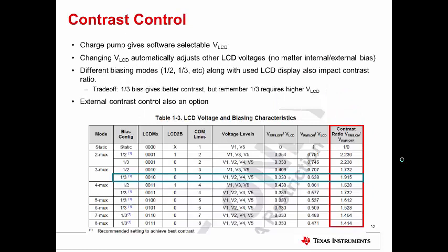When using the charge pump, the VLCD of the display is software controlled. This allows you to be able to easily adjust contrast in software. This will adjust your other LCD voltages as well, regardless of whether you use external or internal biasing. Your different biasing modes and the particular display that you use are also going to have an impact on your contrast ratio. As you can see in the chart, the contrast ratio can be represented as the RMS voltage for on and the RMS voltage for off, divided by each other. As you can see, you will get better or worse contrast depending on the muxing and bias configuration that you are using with your display. Some configurations trade off a reduced contrast ratio for a reduction of the full-scale LCD voltage VLCD used. You can also control contrast externally.